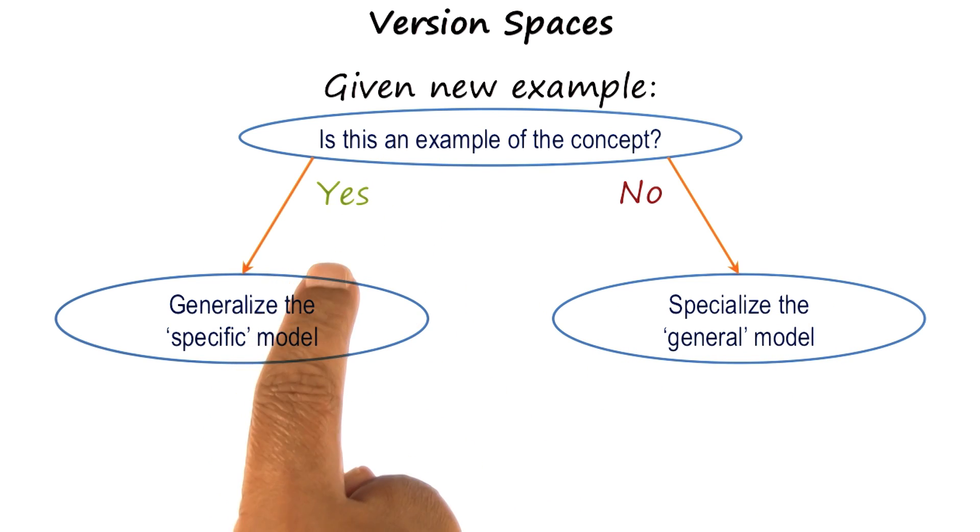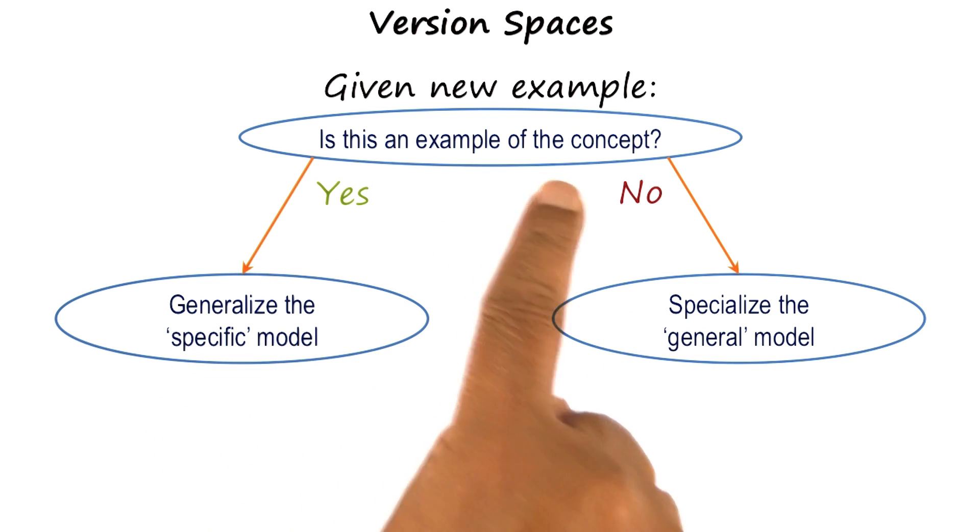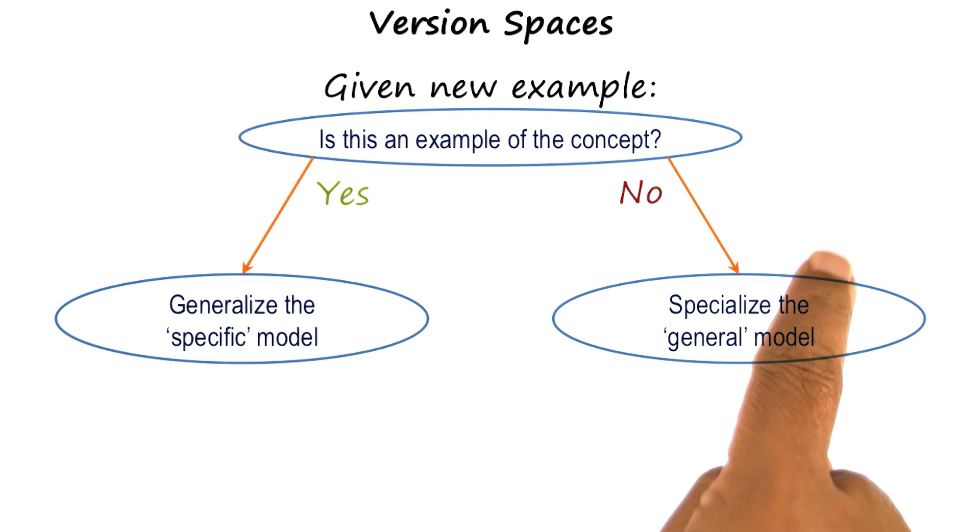If it's a positive example, then we generalize the specific model. If it's a negative example, we specialize the general model.